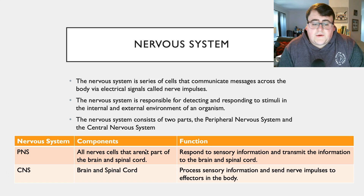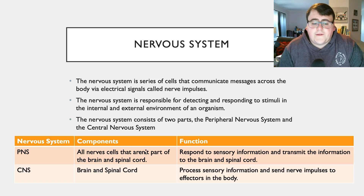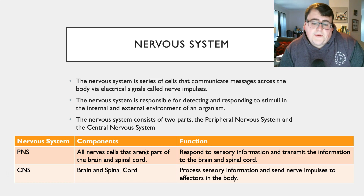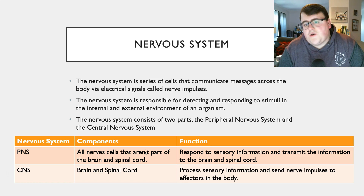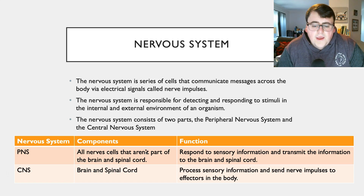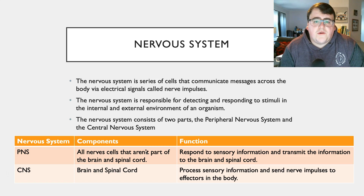The nervous system is broken up into two different parts: the peripheral nervous system and the central nervous system. The central nervous system is basically just your brain and your spine, and its purpose is to process the sensory information and send nerve impulses to effectors in the body to initiate a response. Whereas your peripheral nervous system is every nerve cell that's not in your brain or spine — they're like the add-ons of the nervous system, whose entire purpose is to respond to sensory information and transmit that information to the brain and the spinal cord for processing.